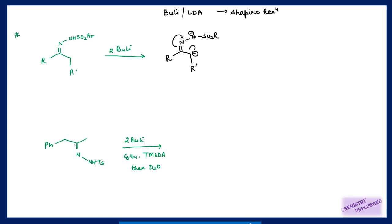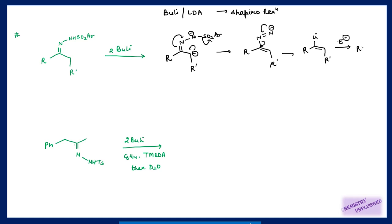With the dianion, in the next step this charge shifts here, this shifts here, and the aryl sulfonyl group is removed — always remember you must first remove this sulfonyl group because it is a very good leaving group. In the next step the negative charge shifts to this carbon, and it combines with lithium from the alkyl lithium or LDA to give an organolithium species. If you then use an electrophile, the electrophile occupies the position of lithium.